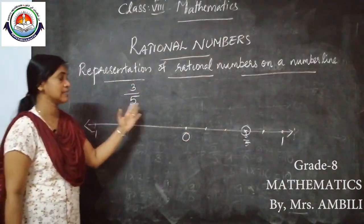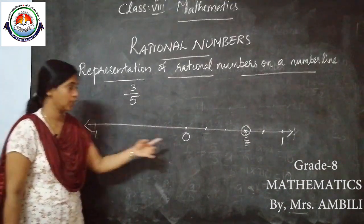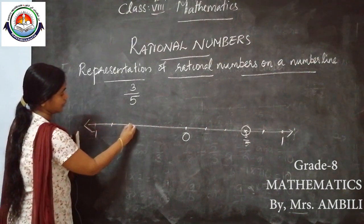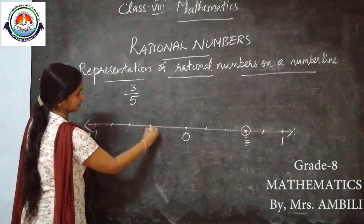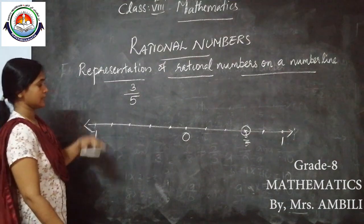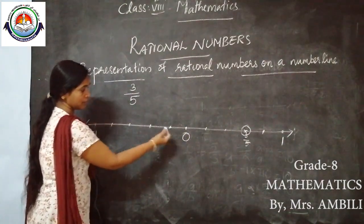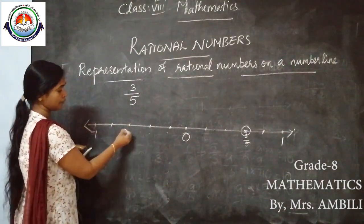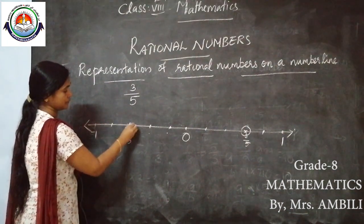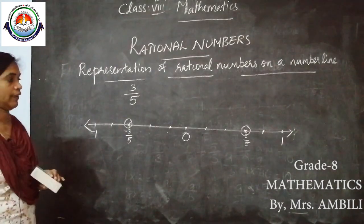If we need to represent −3/5, we divide the portion from 0 to −1 also into 5 equal parts. The points are −1/5, −2/5, −3/5. So this is the point −3/5.